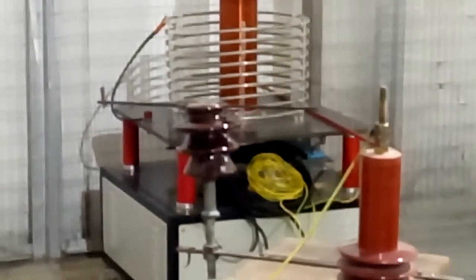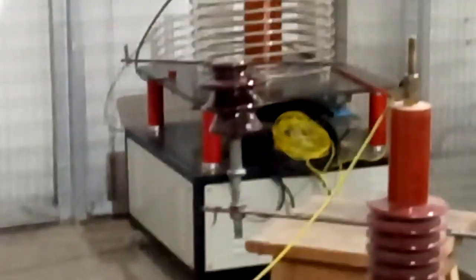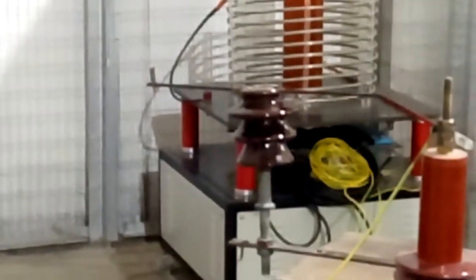Now see, all the spark gaps have triggered but the insulator has sustained this voltage. There was no flashover across the insulator.